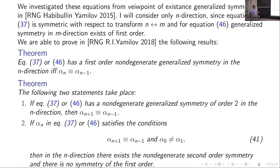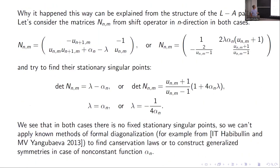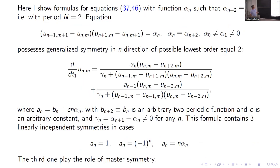And if pi_n is a period-N function, then the simplest generalized symmetry for these equations has order N. So these equations here are examples where the generalized symmetry in one direction can have any possible lowest order.